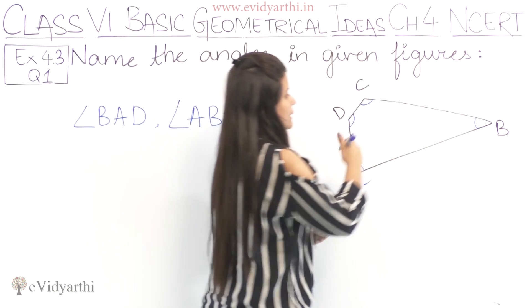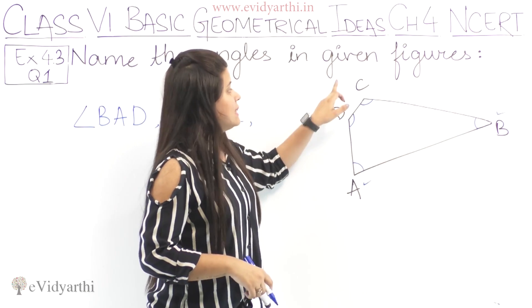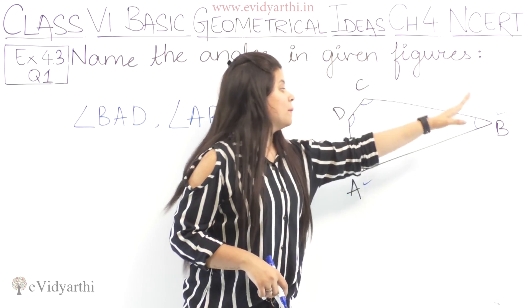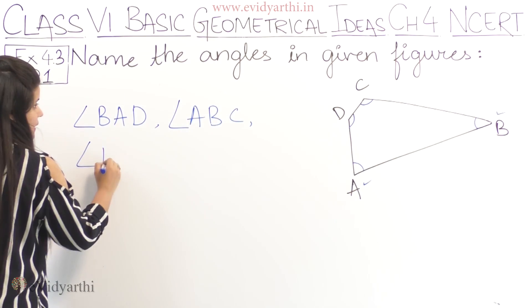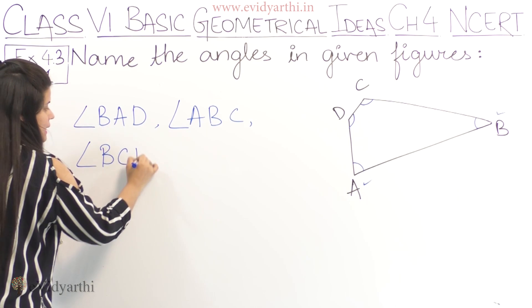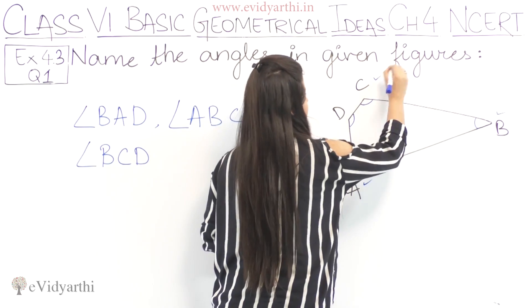Next, angle C. Angle C can be written as B, C, D or D, C, B. So let's write it as B, C, D. The middle letter is C, so this is angle C.